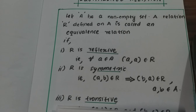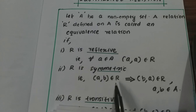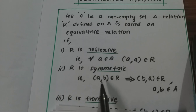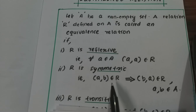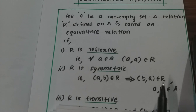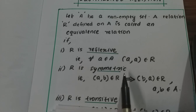Symmetric means: if (a, b) belongs to R, then (b, a) also belongs to R. So if a is related to b, then b is related to a. Therefore R is symmetric.